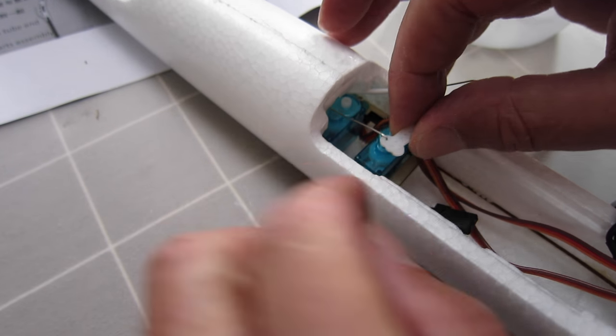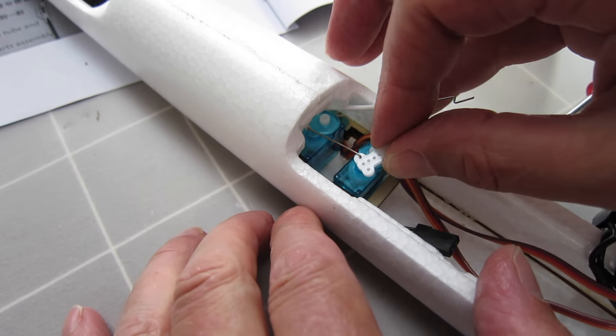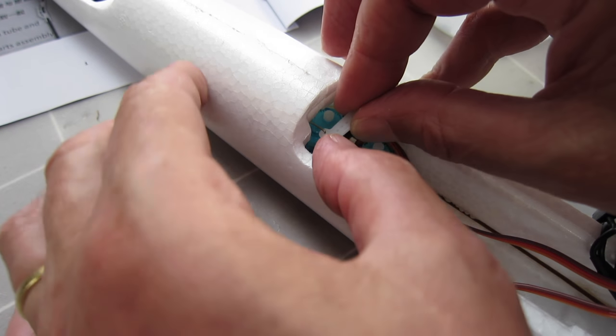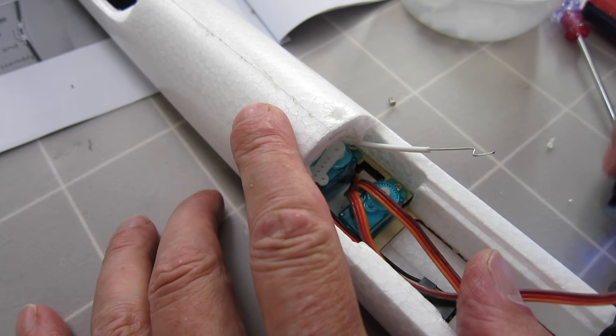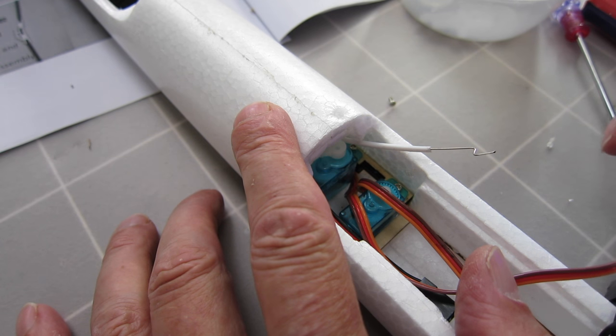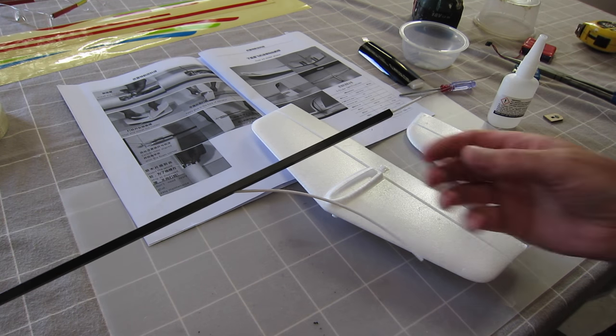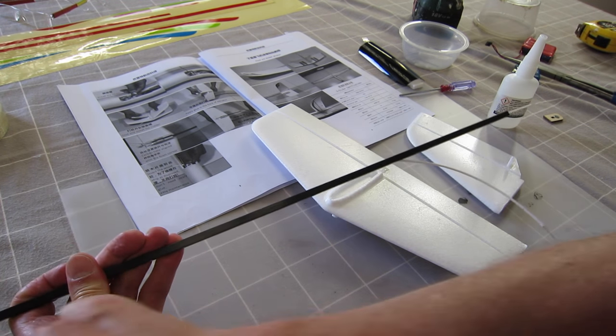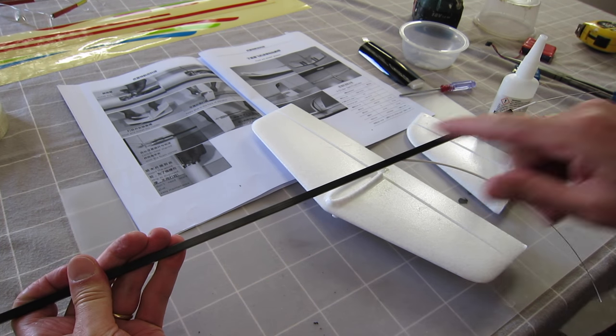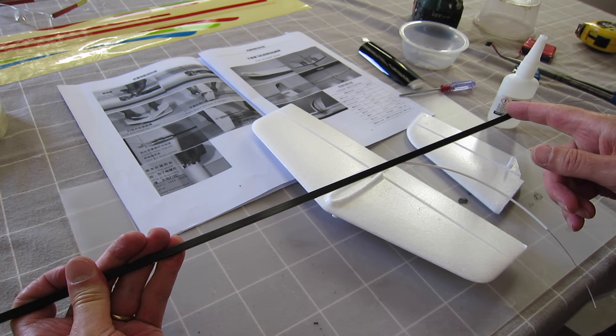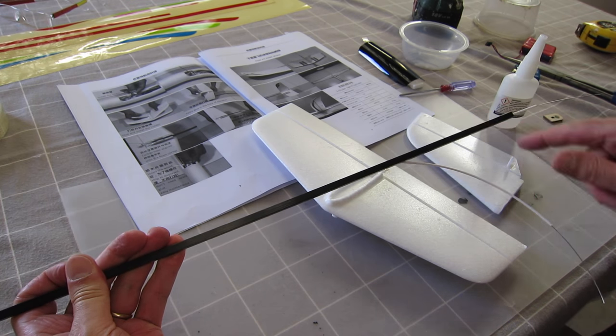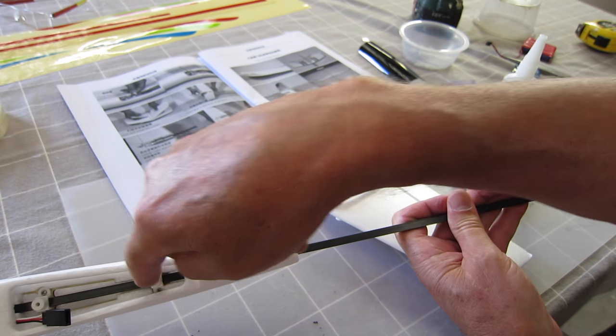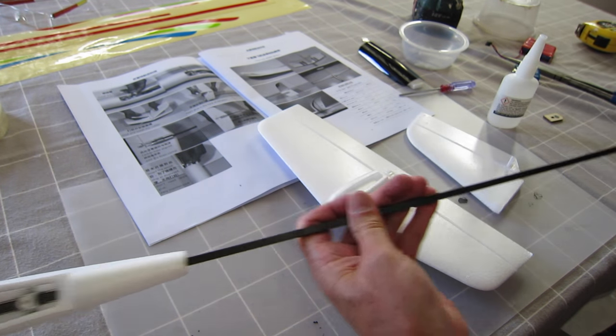Now I've got to get the elevator pushrod in and screwed in there. Looking at the back of the boom, the instruction manual says the boom should be showing 541mm, which it is here, and you can adjust that by undoing these clamps and moving the boom backwards and forwards.